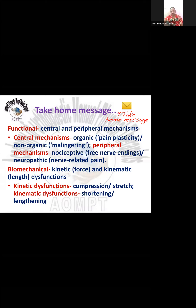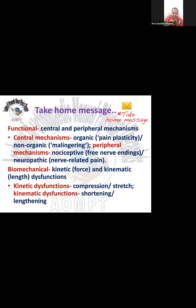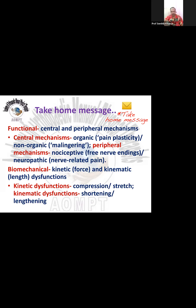Non-organic mechanisms include religious, spiritual, or emotional relationships with pain — this is called malingering. The organic one is called pain plasticity, which is the representation of pain in the brain. Peripherally, nociception arises from free nerve endings in structures. For example, menisci do not have free nerve endings, so they are not pain sensitive, but menisci are attached to ligaments and capsules, which are pain sensitive. Neuropathic pain is nerve-related pain from the nerve or adjacent structures.